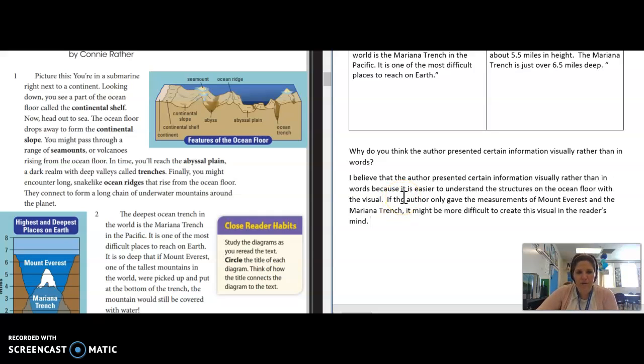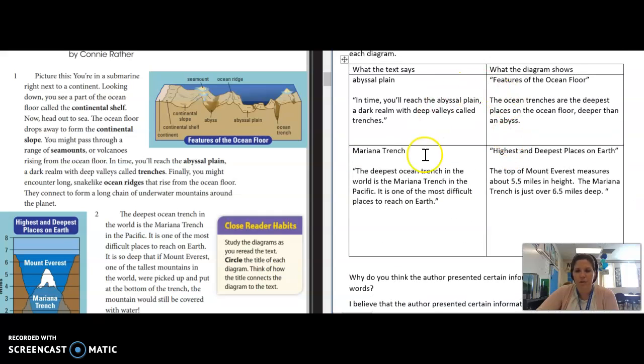Today you guys are going to read a different text titled Going Down, Down, Down. You are going to complete a graphic organizer very similar to the one that you did today, talking about what you read in the text and then what you see in the diagram. It's also going to talk about the ocean levels and the three main zones in the ocean. After that, you have a couple multiple choice questions and then a short response question. Let me know if you have any questions. Great job on this.